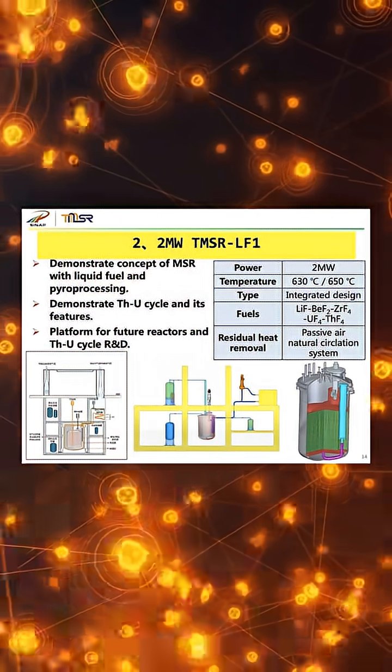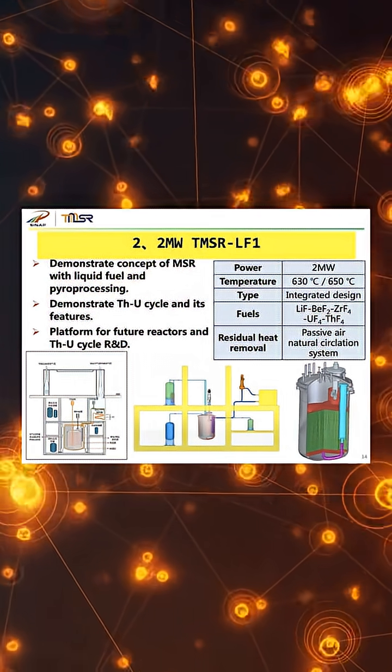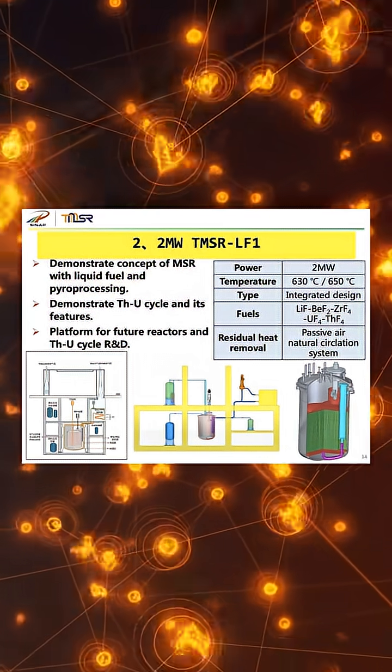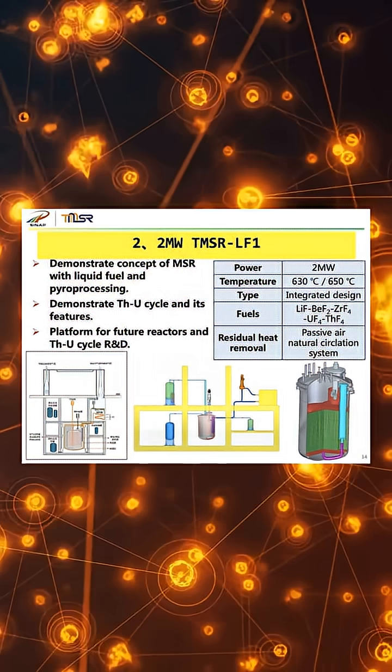Thorium fuel cycles produce less long-lived radioactive waste, generate far less plutonium, and are extremely difficult to weaponize. The reactor uses uranium enriched to less than 20% uranium-235, remaining below weapons-grade thresholds.